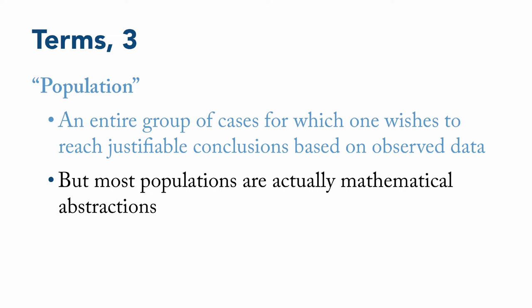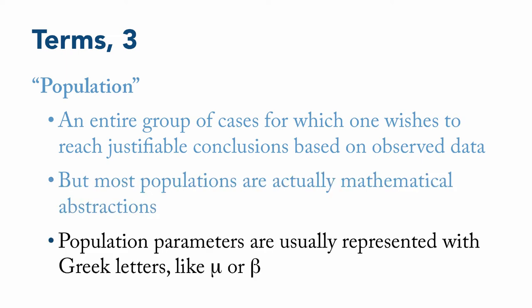One important thing to know about populations, however, is that it's customary to represent population parameters or information about the population with Greek letters, like mu for the population mean or beta for a population regression coefficient.